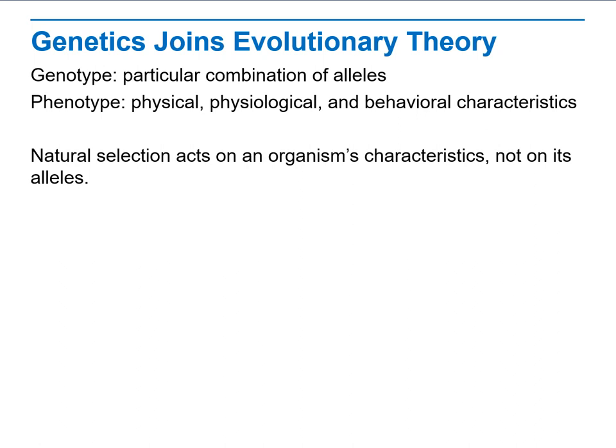When we talk about genetics, we talk about how evolutionary theory begins. When we talk about evolutionary theory, we talk about the genotype and the phenotype. The genotype is the particular combination of alleles, whereas the phenotype is the physical appearance, the physiological, and the behavioral characteristics of the same species.